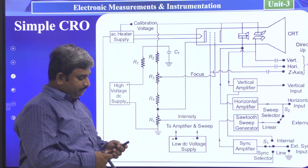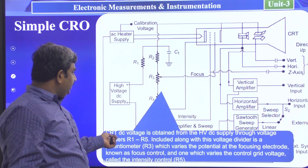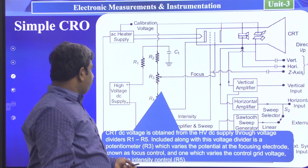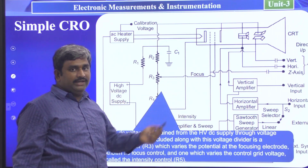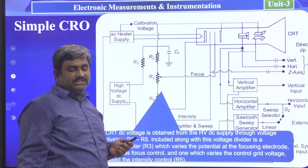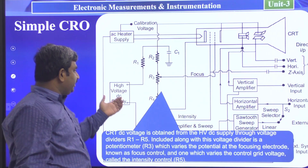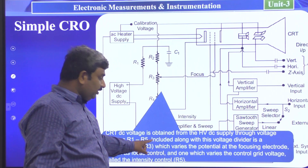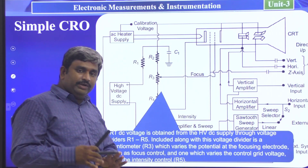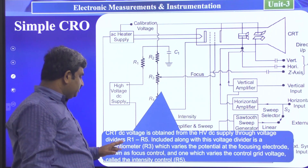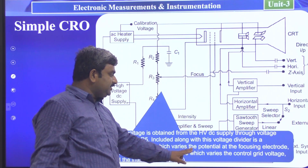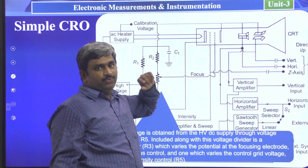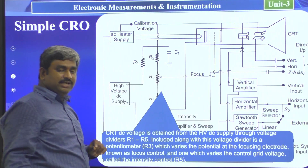CRT DC voltages are obtained from the high voltage DC supply through a voltage divider network from R1 to R5. With this resistor divider network, we obtain lower DC voltages from the high DC voltage. The potentiometer R3 varies the potential at the focusing electrode, allowing voltage variation from low to high at the focusing electrode.